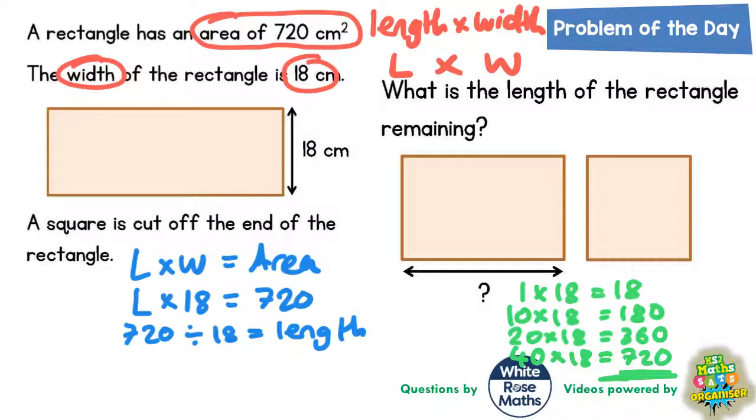And we actually get told that the area is 720. So that must tell us that the length would have to be 40. This 40 would be the length of the rectangle. So 40 times 18 gives us the area 720 centimetres square.